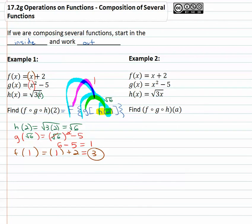Let's try another example where we do a composition with a variable. Here we're asked to find f of g of h of a, rewriting it in the useful form g(h(a)).